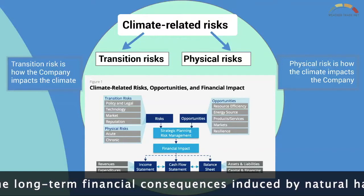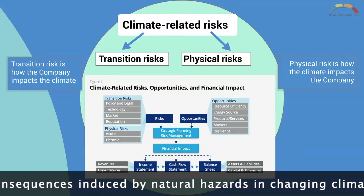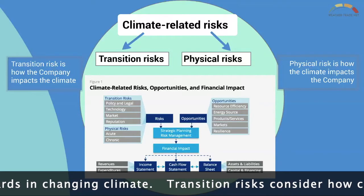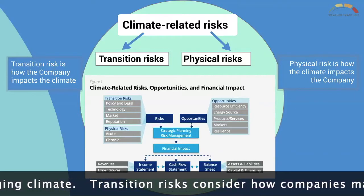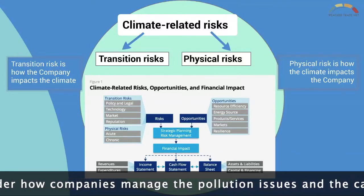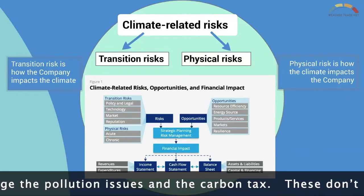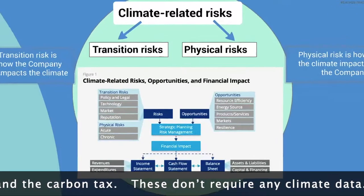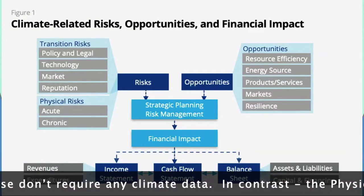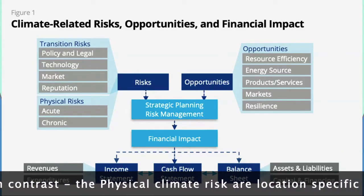Transition risks consider how companies manage pollution issues and the carbon tax. These don't require any climate data. In contrast, the physical climate risks are location-specific and entirely built on climate data.